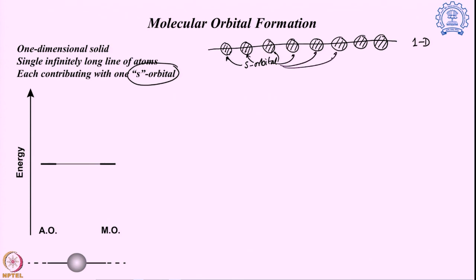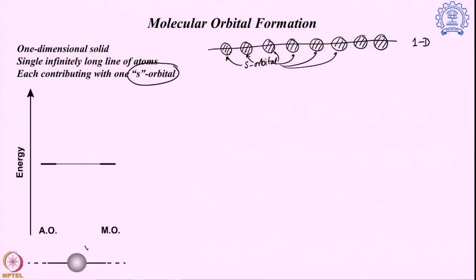So how does this help us understand molecular orbital formation? We start from the beginning. First, assume there is only one atom present — not interacting with anything else, but it has this s orbital. Since this s orbital is not interacting with any other atom, it will remain at the same energy. This creates a molecular orbital where only one atom is present in the one-dimensional solid. The energy is the same for both the atomic orbital and the molecular orbital.